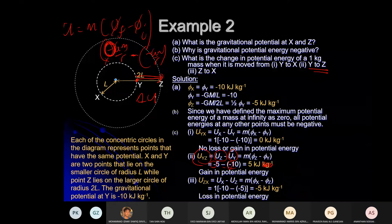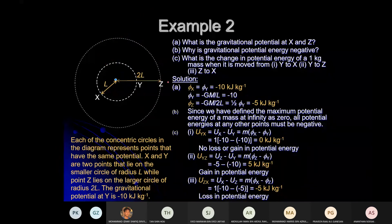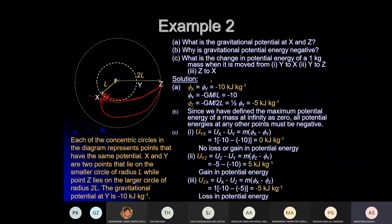Z to X: ΔU = m(φ_X – φ_Z). φ_X = –10, φ_Z = –5. So –10 – (–5) = –5 kJ. Potential energy is lost when going from Z to X by 5 kJ.